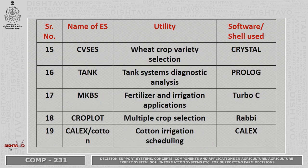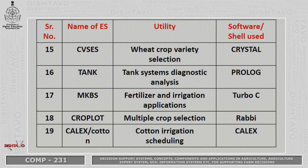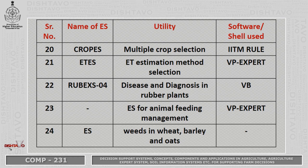CVSES is an expert system for wheat crop variety selection with software support Crystal. TANK is an expert system utilized for tank system analysis with software Prolog. MKBES is used for fertility and irrigation application with software Turbo C. CropPlot is utilized for multiple crop selection in a typical agricultural field with software Rabi. CALEX, also known as cotton, is used for cotton irrigation scheduling with software CALEX. CROPS is another expert system for multiple crop selection with software IITM.